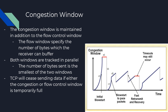The congestion window is maintained in addition to the flow control window. The flow control window specifies the number of bytes which the receiver can buffer. Both windows are tracked in parallel. The number of bytes sent is the smallest of the two windows, and TCP will cease sending data if either the congestion or flow control window is temporarily full.